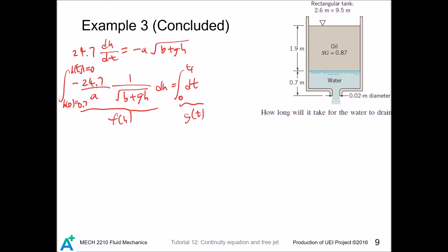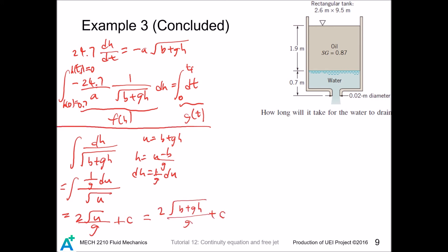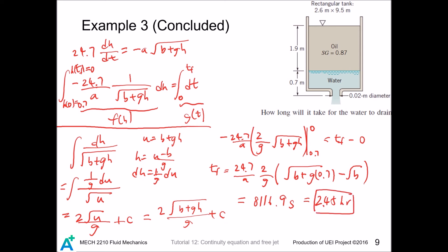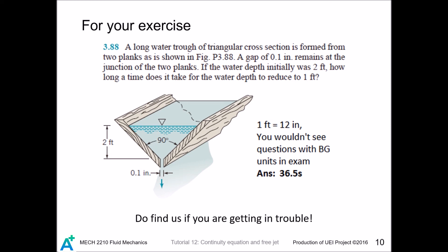We divide this task into a few steps. We first bring this guy out and find its anti-derivative. Let u = b + gh, so h = (u-b)/g and dh = (1/g)du. We integrate and change it back. From this equation we have t_f equals [the final expression]. We are done with this complicated example.